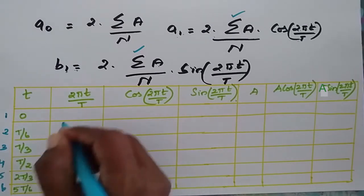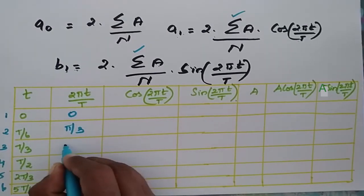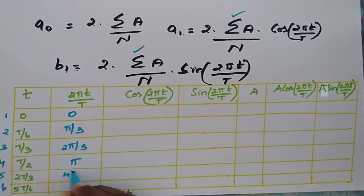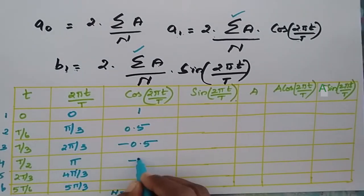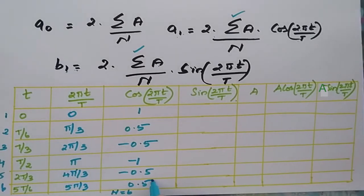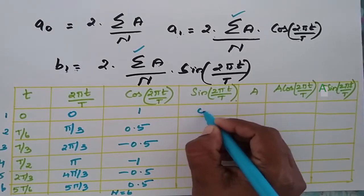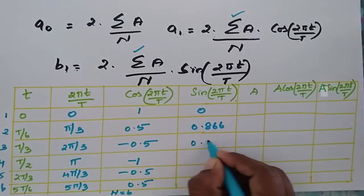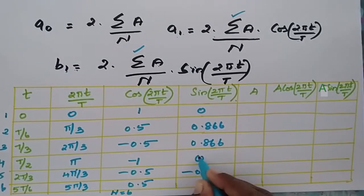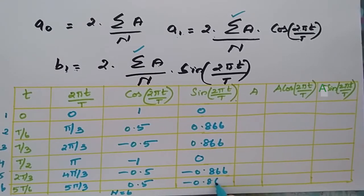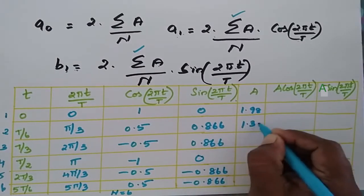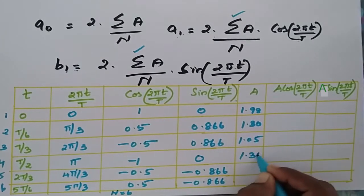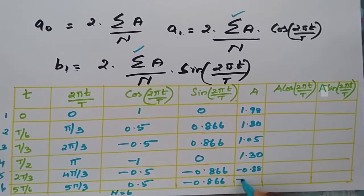Now we substitute the angle values: 0, 2π/3, 4π/3, 2π, and 5π/3. The cos values are: 1, 0.5, −0.5, −1, −0.5, 0.5. The sin values are: 0, −0.866, −0.866, −0.866, −0.866, −0.5.